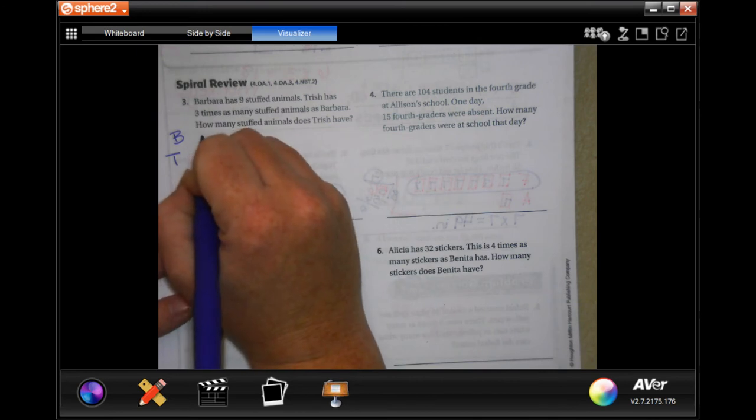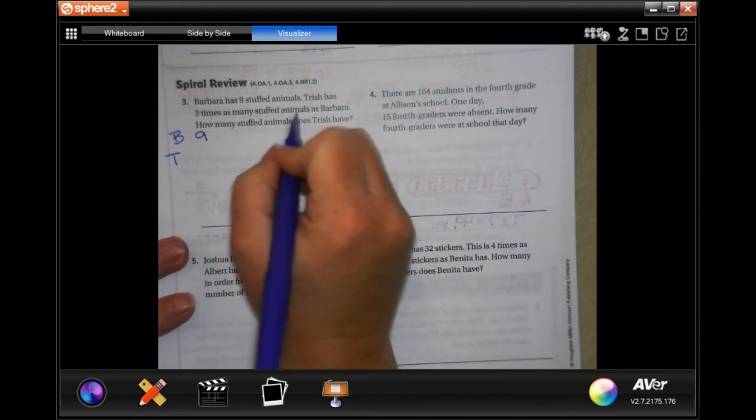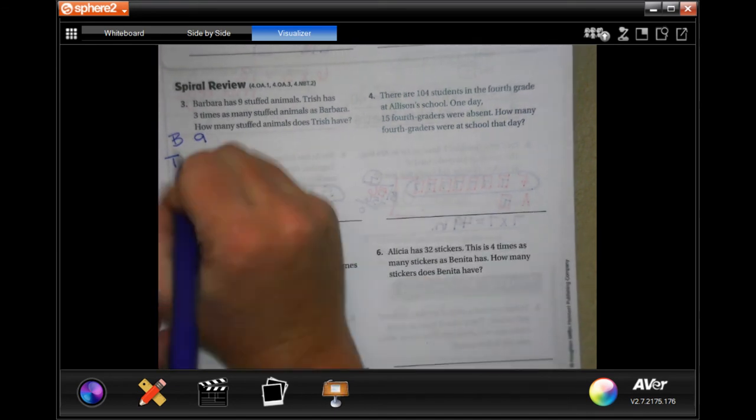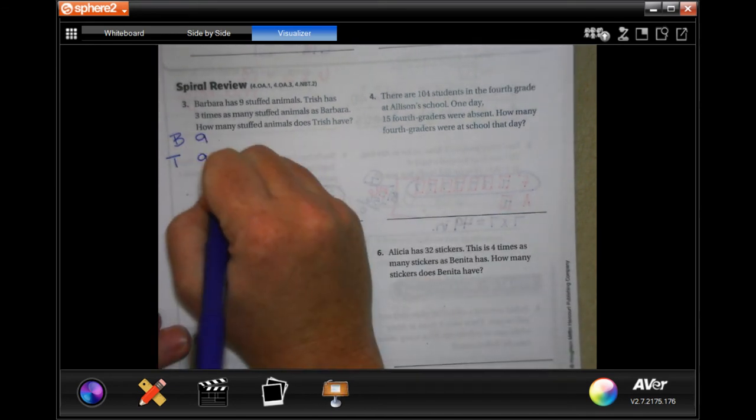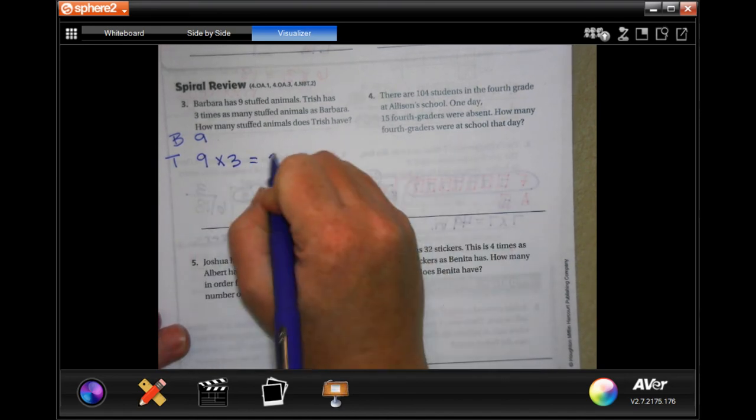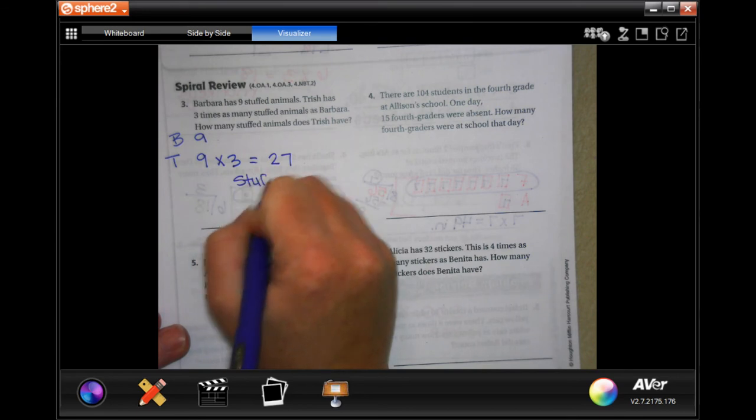Trish has three times that many, so she has those nine but then she has three times more. So nine times three equals 27 animals.